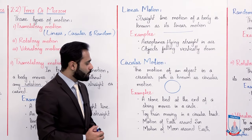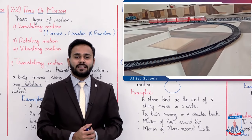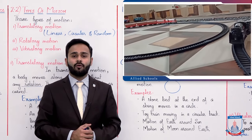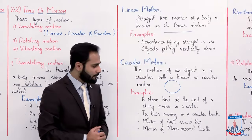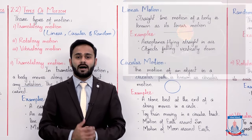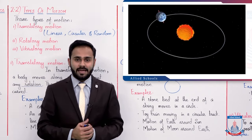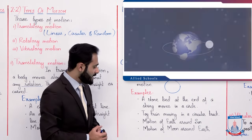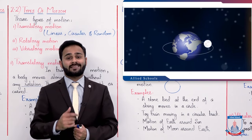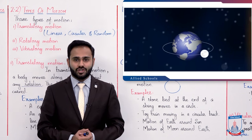Similarly, a toy train moving in a circular track — ek toy train hai, yeh circular track mein move kar rahi hai, so yahaan par jo train ka motion hoga woh bhi circular motion hai. And similarly, the motion of Earth around Sun — the most important. Earth sun ke around ek circular path mein move kar rahi hai, toh usse bhi hum kahenge yeh bhi circular motion hai. Similarly, the motion of Moon around Earth — moon jo hai woh bhi Earth ke roundabout ek circular path mein move karti hai, toh usse hum kahenge yeh bhi ek circular motion hai.